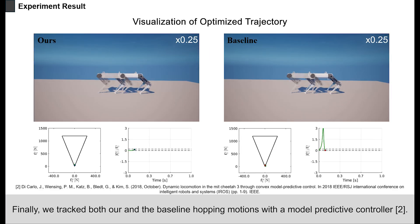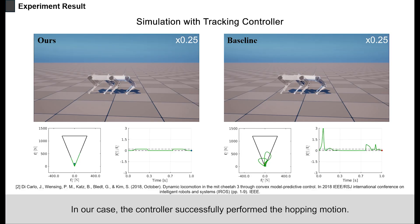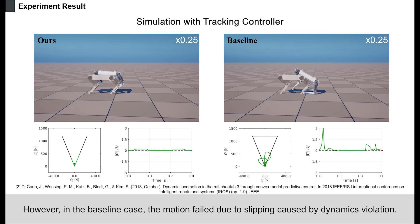Finally, we tracked both our and the baseline hopping motions with a model predictive controller. In our case, the controller successfully performed the hopping motion. However, in the baseline case, the motion failed due to slipping caused by dynamics violation.